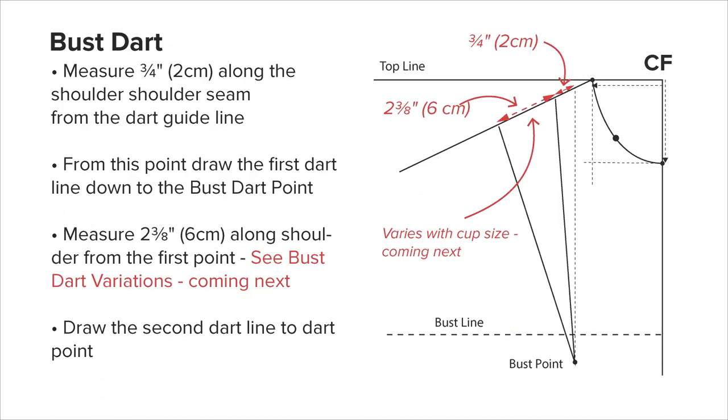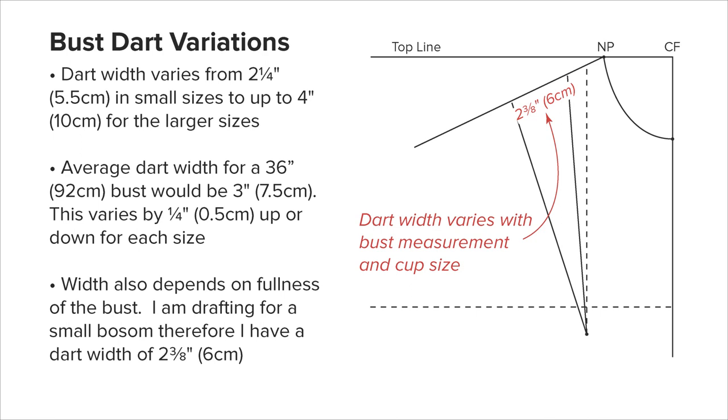The bust dart: where this line meets the shoulder, measure three-quarters of an inch or 2 centimeters to the left along the shoulder line. Mark this point and draw a dart line from there to the bust dart point. Measure a dart width of 2.25 inches or 6 centimeters along the shoulder and draw the other dart line to meet the bust dart point. Bust dart variations: dart width varies from 2.25 inches or 5.5 centimeters in small sizes, and up to 4 inches or 10 centimeters for the larger sizes, but also depends on the fullness of the bust. I am drafting for a small bosom - refer to my table of average measurements, check the info button. This is a variation that you may need to fine-tune at a later stage.